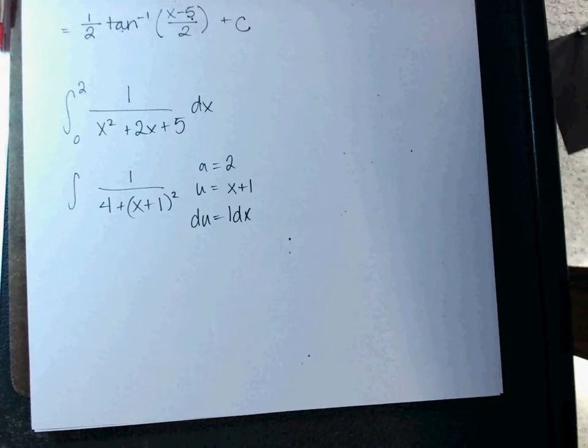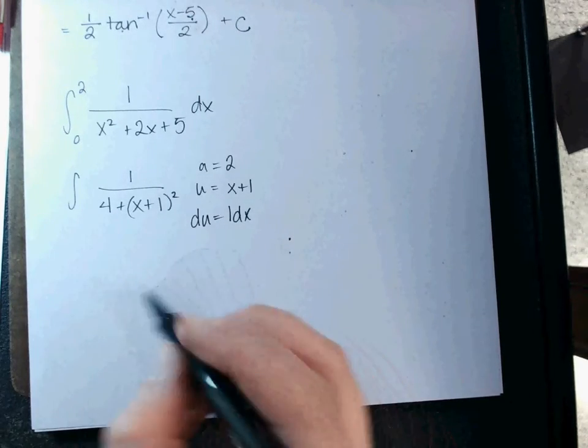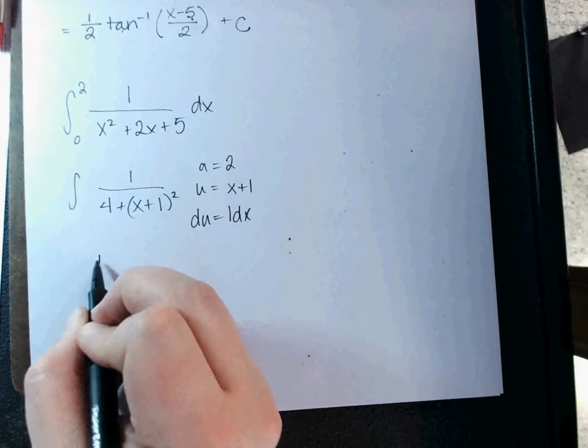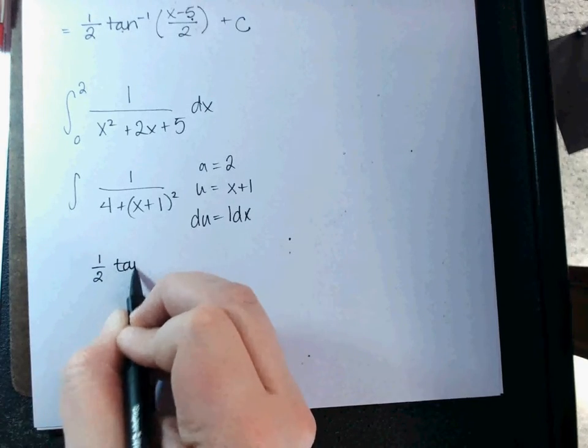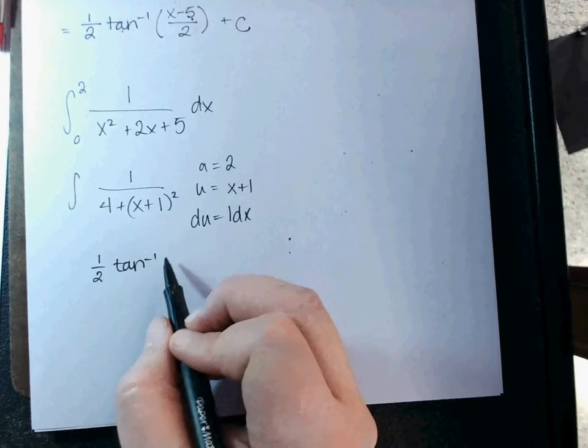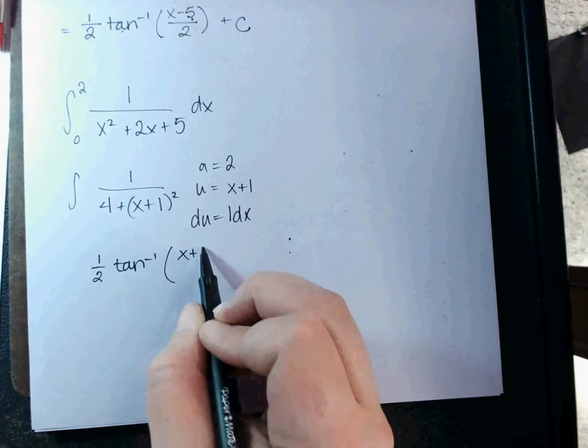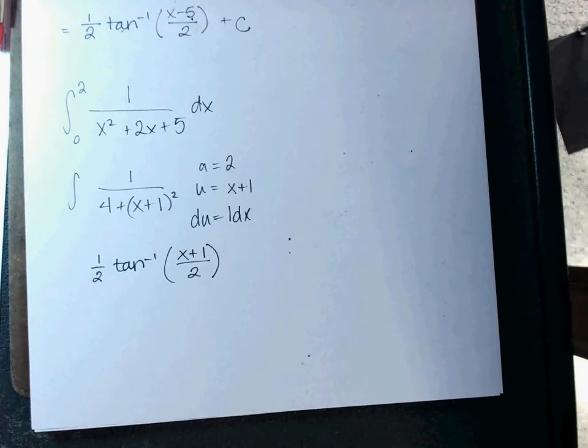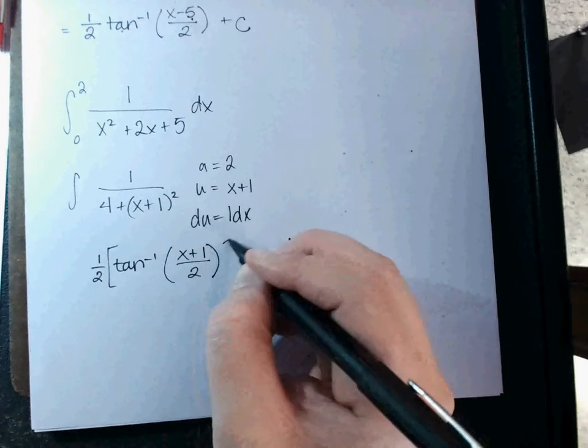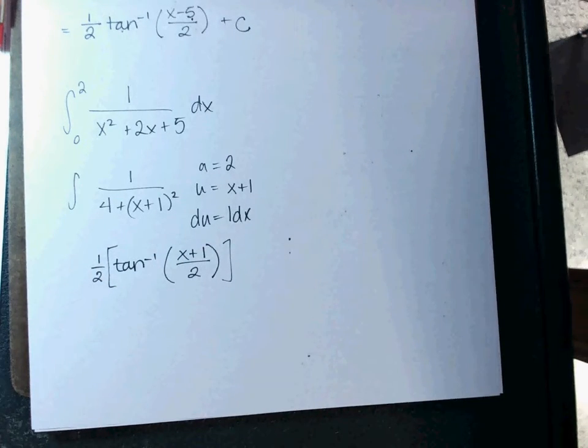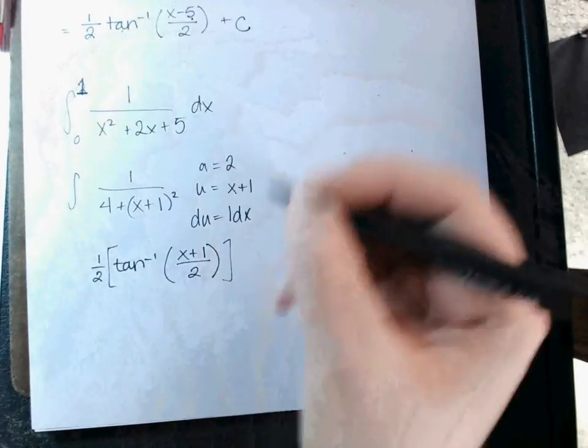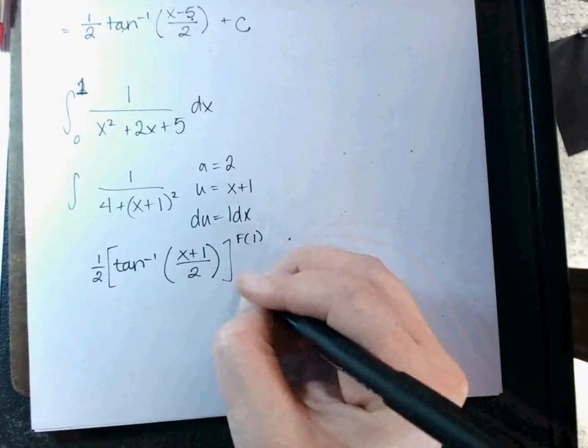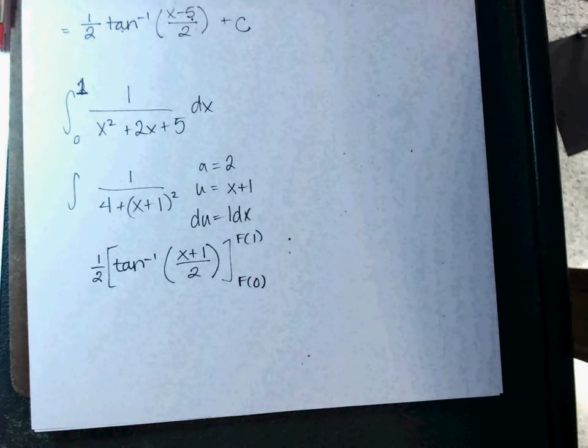So, and then when you see that your DU is a dx, you know there's no weird numbers coming to the front. Okay, from here, what is the formula for this? 1 over A? 1 over 2. Inverse tan of U over A. Okay, what's that? x plus 1 over 2. Okay, then from there, I had endpoints. So we're doing that. And actually, let's change the upper boundary. Change that to a 1. Otherwise, we can't do it. Okay, we are plugging in 1 and 0.